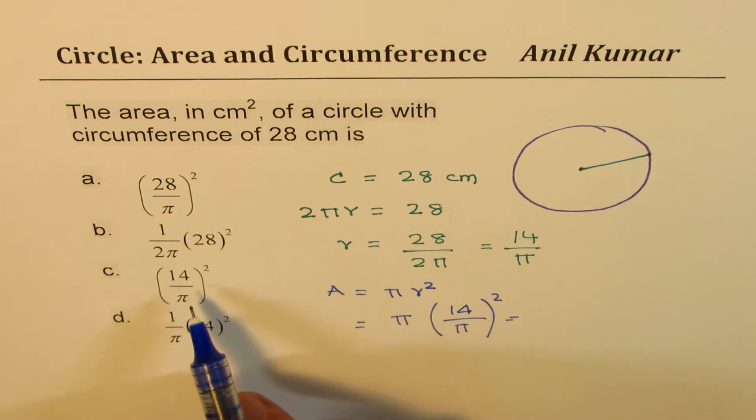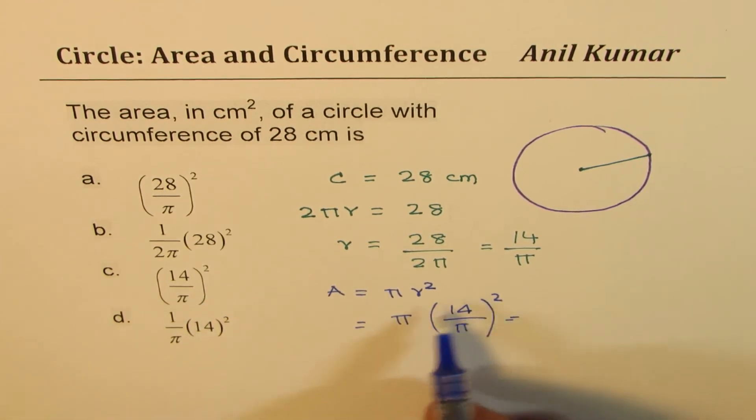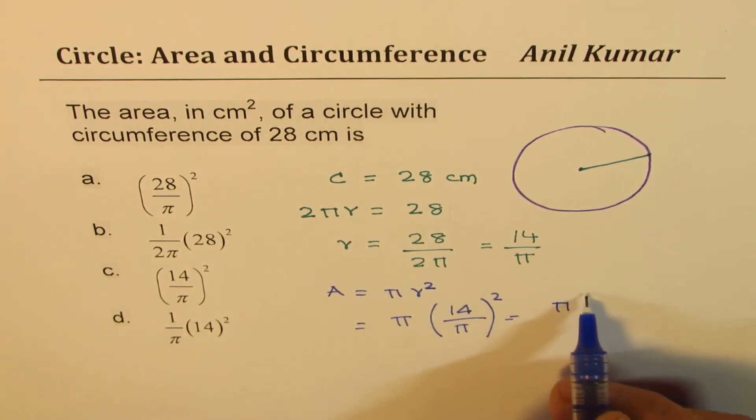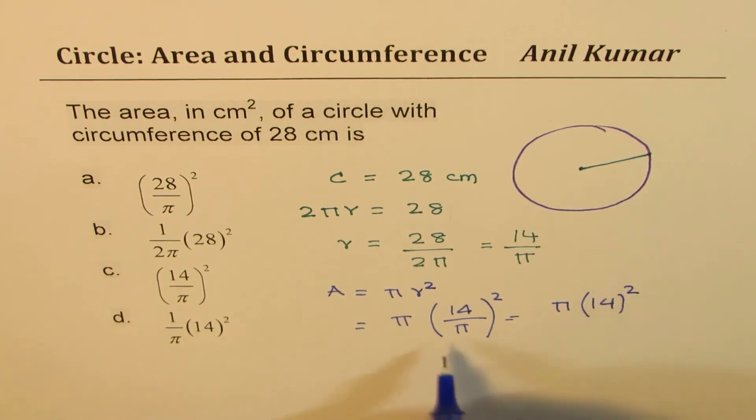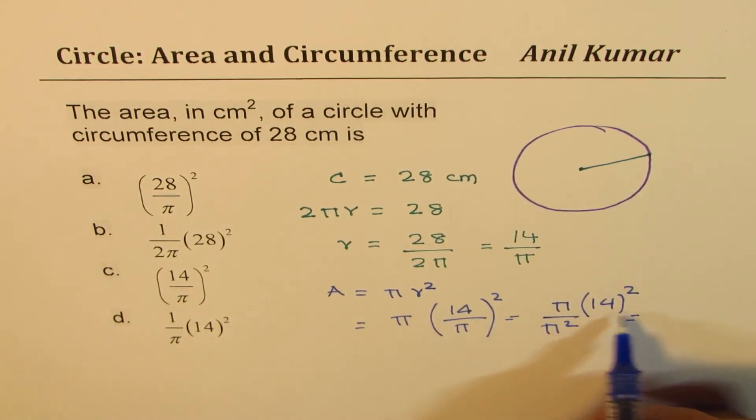Now since all these answers are exact values, we'll maintain 14 over π. We could write this as π times 14 squared, and taking out this π outside the brackets, we get π² in the denominator. That gives you 14² in the numerator. π and π cancel and we are left with one π.